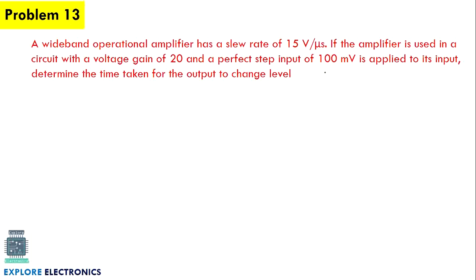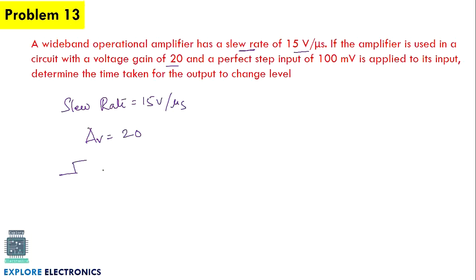The next problem is also on slew rate. A wide band amplifier has a slew rate of 15 volts per microsecond. It is used in a circuit with a voltage gain of 20, and a perfect step input of 100 millivolts is applied. We need to determine the time taken for the output to change level.